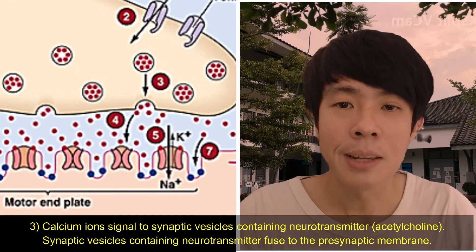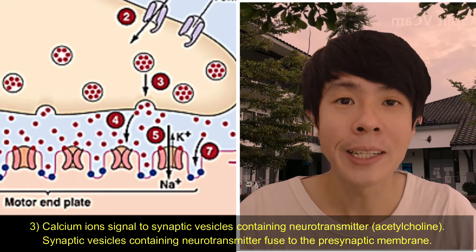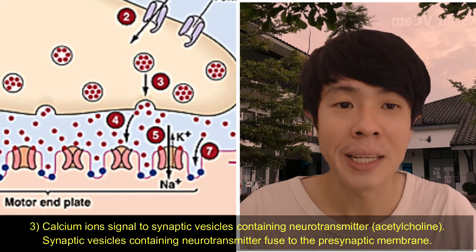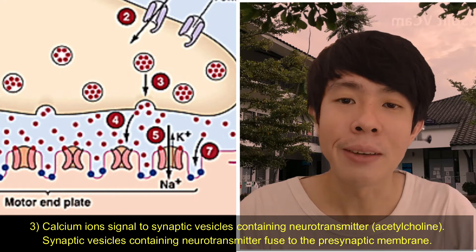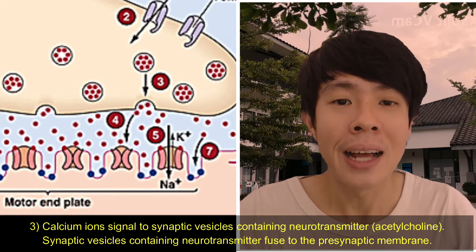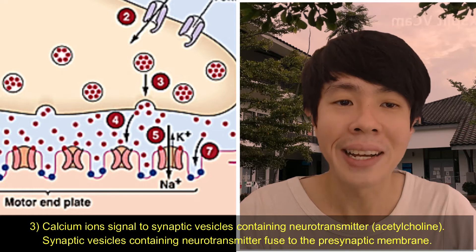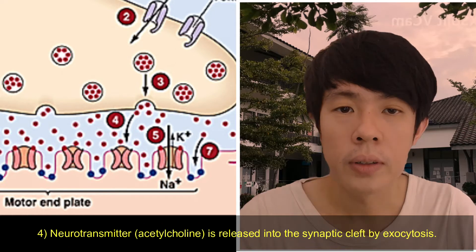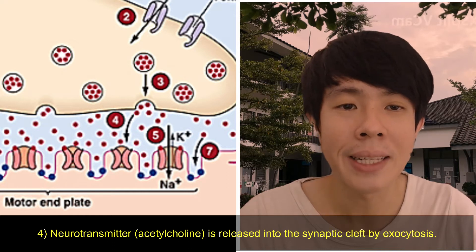Calcium ions signal the synaptic vesicles containing neurotransmitter — in this case, acetylcholine. The synaptic vesicles containing acetylcholine fuse to the presynaptic membrane. The neurotransmitter, acetylcholine, is released into the synaptic cleft by exocytosis.